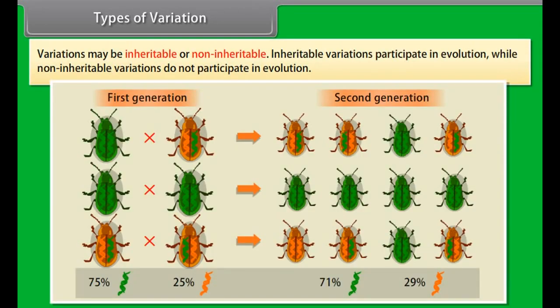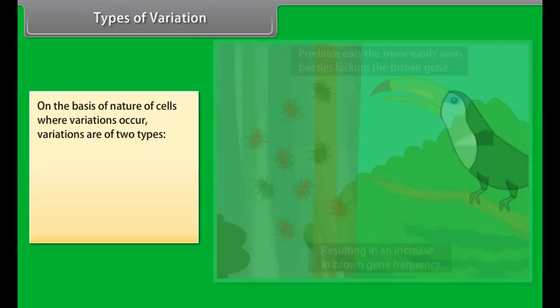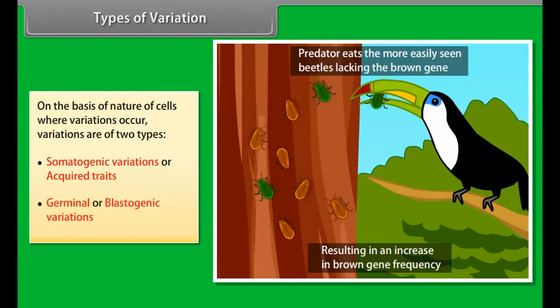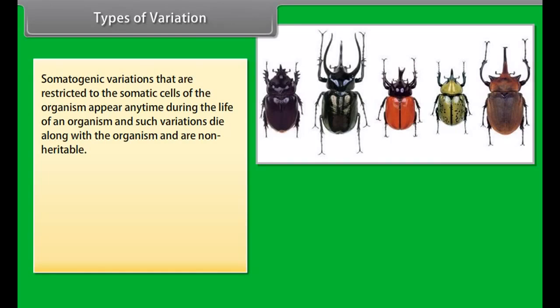Variations may be inheritable or non-inheritable. Inheritable variations participate in evolution while non-inheritable variations do not. On the basis of the nature of cells where variations occur, variations are of two types: somatogenic variations or acquired traits, and germinal or blastogenic variations. Somatogenic variations are restricted to somatic cells of the organism, appear any time during the life of the organism, die along with the organism, and are non-heritable.